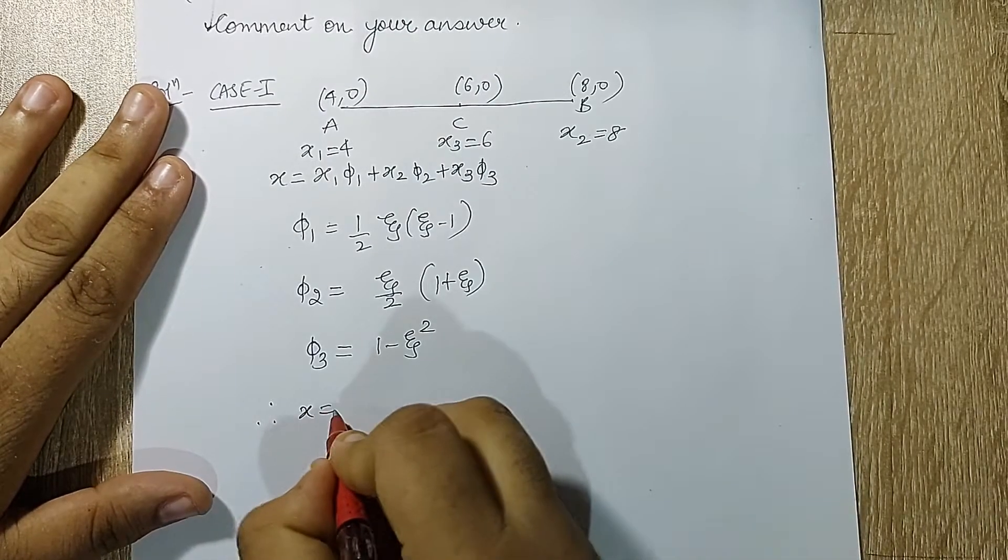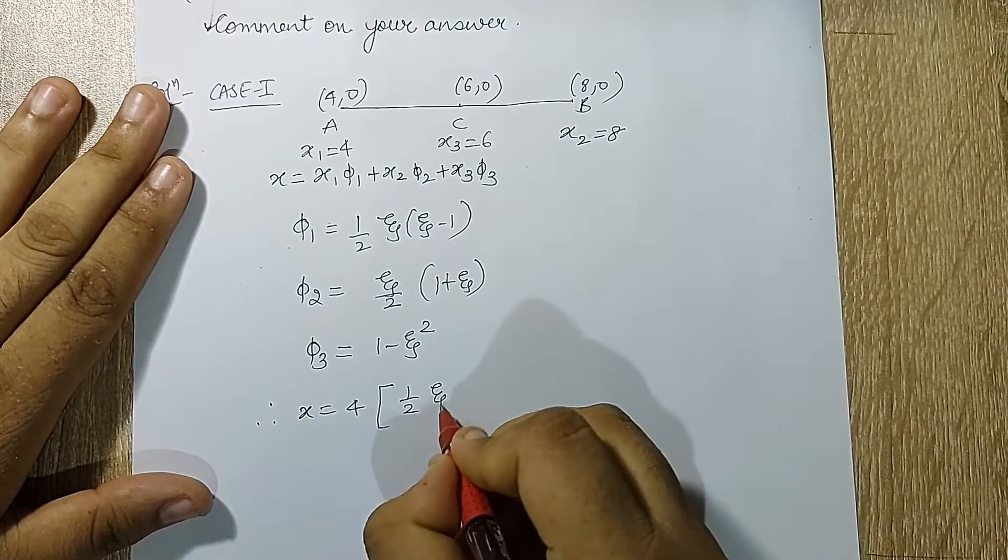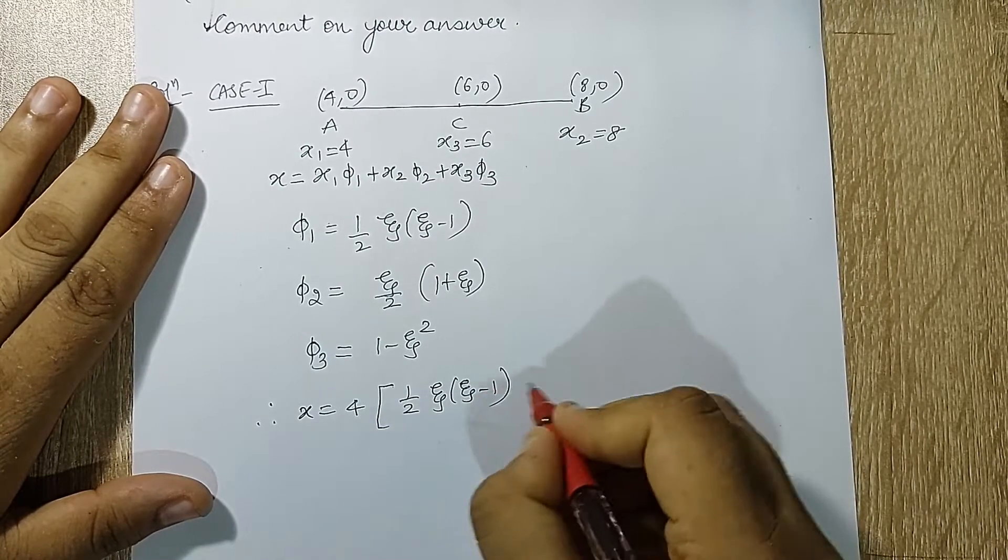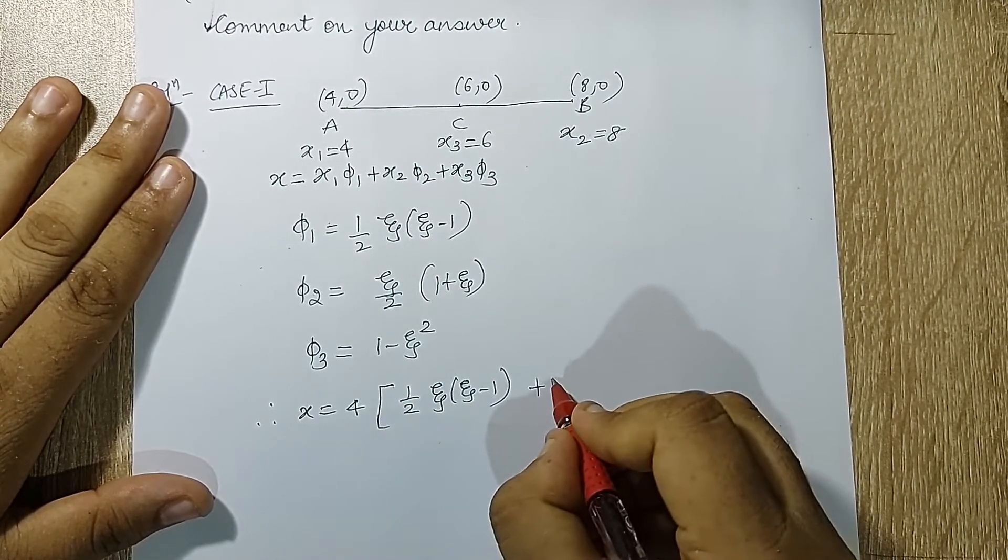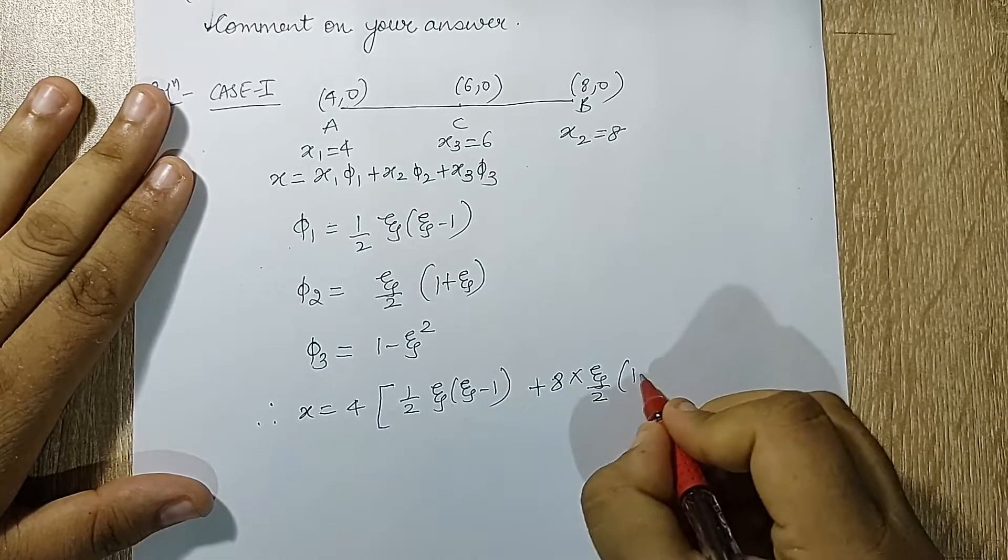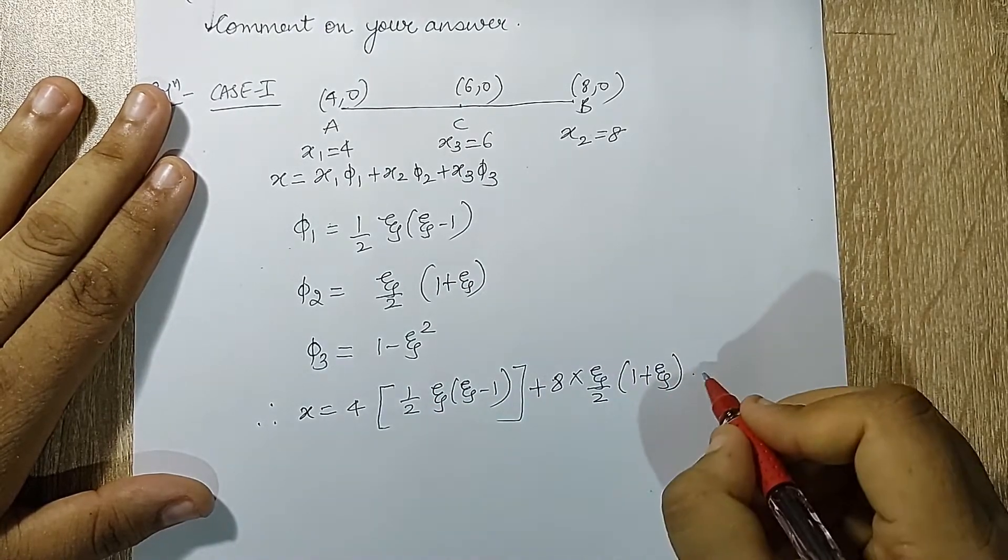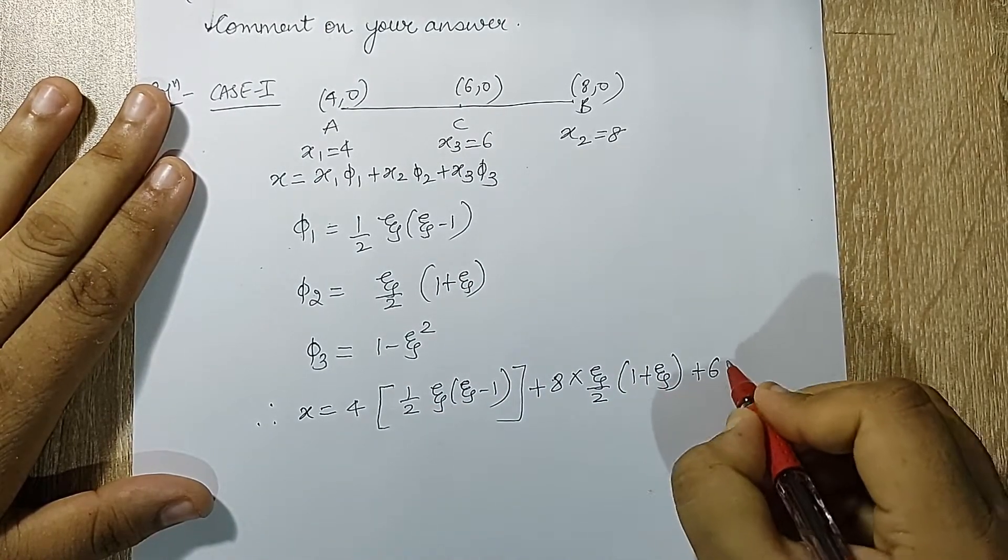So I'll substitute here. Therefore x is equal to x1 is 4 into 1/2*zeta*(zeta - 1) plus x2 which is 8, then I have zeta/2*(1 + zeta), and last I have plus 6 into (1 - zeta squared).